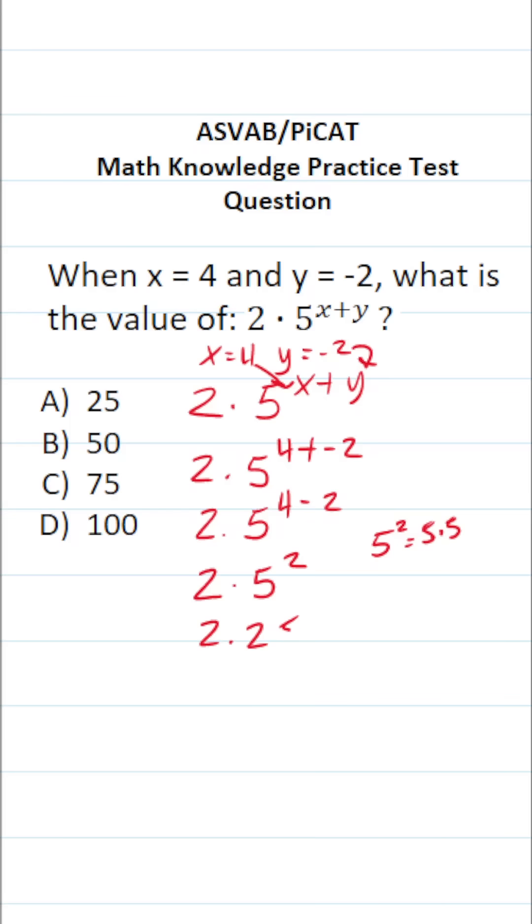So this becomes 2 times 25. 2 times 25 is 50, so this one is going to be B.